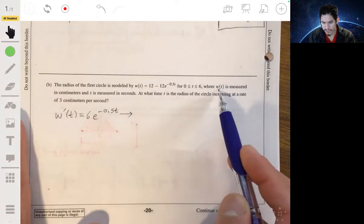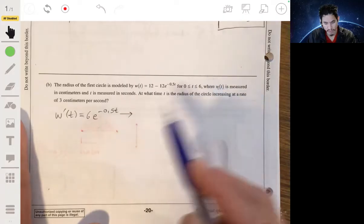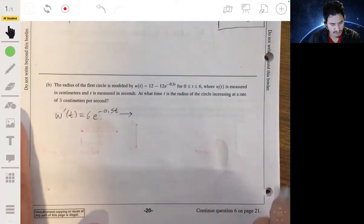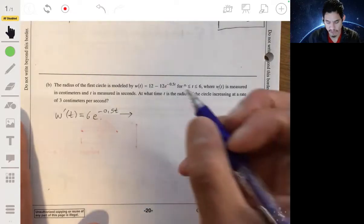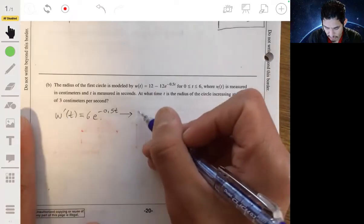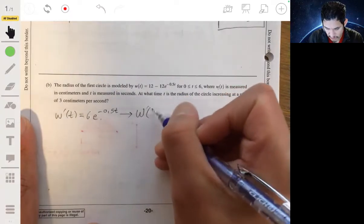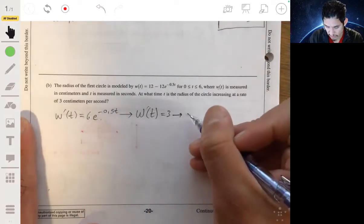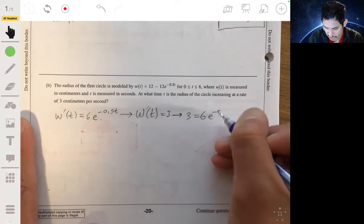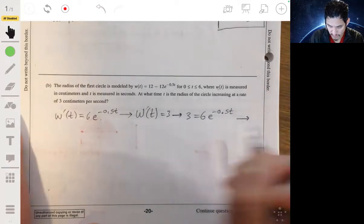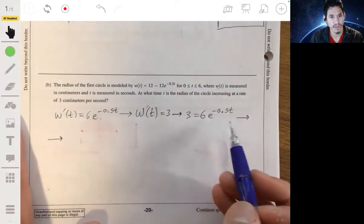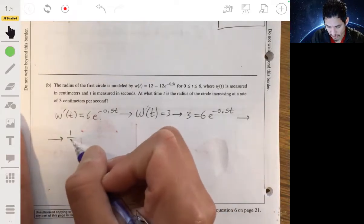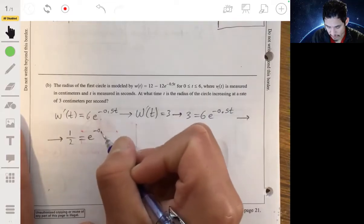And we essentially want to solve this derivative for the value that makes it equal to 3. So we want to set w'(t) equal to 3. So 3 is then equal to 6e^(-0.5t). Dividing both sides by 6, 3 over 6, or we get 1/2 equals e^(-0.5t).